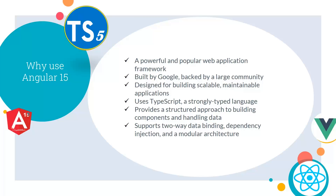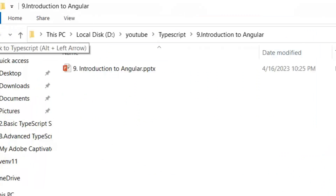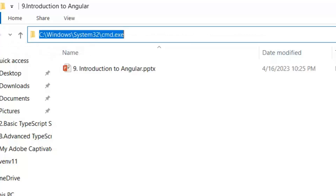Next, let's see the steps to setting up a new Angular 15 project. First, we need to install Angular CLI globally using the command: npm install -g @angular/cli. Then we need to create a new project with: ng new [project-name]. Third, go to the project directory with: cd [project-name]. Finally, run the development server with: ng serve.